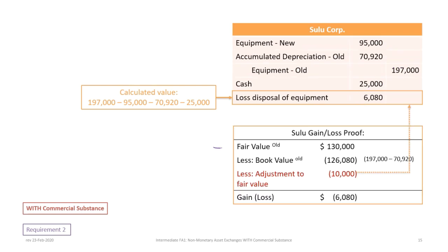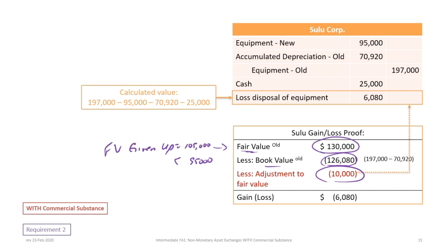As proof: the fair value of the old asset is $130,000, less its book value of $126,080. There is also a fair value adjustment because the fair value of the equipment given up at $105,000 is greater than the $95,000 at which the new asset must be recorded, resulting in a $10,000 loss from that adjustment. This proves the total loss of $6,080 on Sulu's exchange.